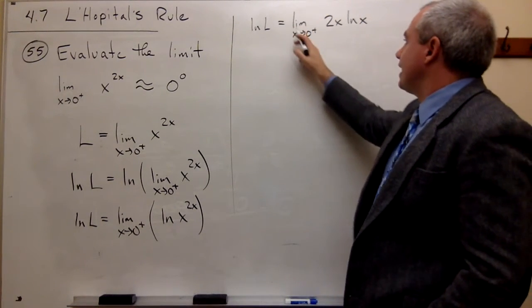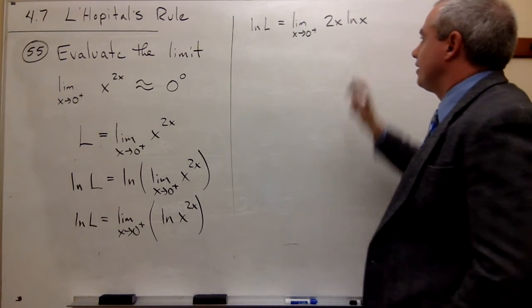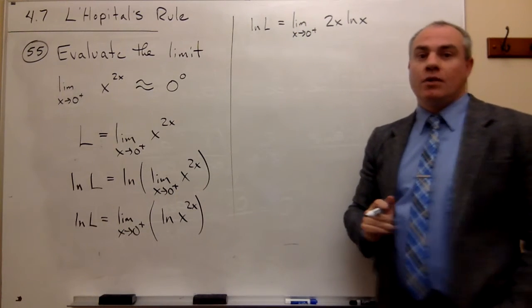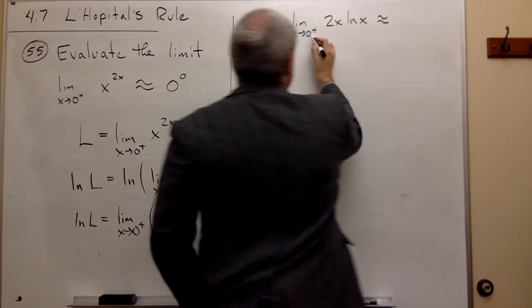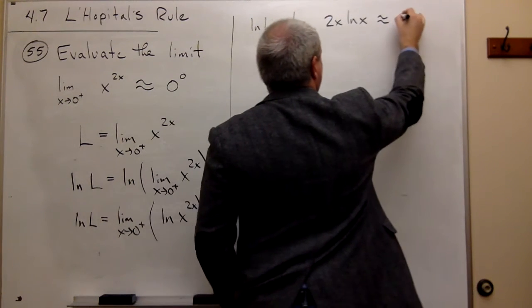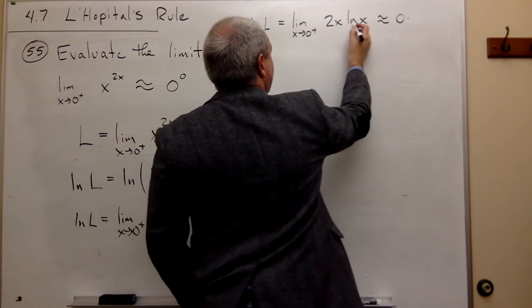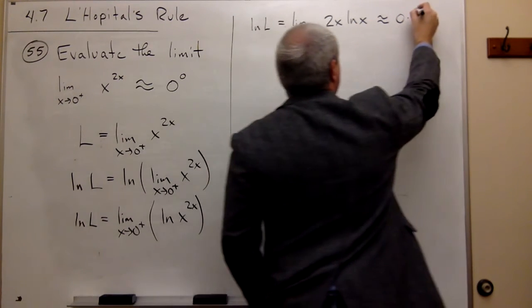So the question is, now is this something that I can deal with? Well, let's see what its form is. This has form, if I plug in zero, 2 times zero is zero. ln of zero from the right is negative infinity.